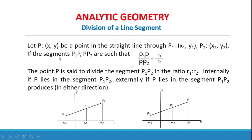Division of a Line Segment. Let P be a point in the straight line through P1(X1, Y1) and P2(X2, Y2). If the segments P1P and P2 are such that P1P over P2 is equal to R1 over R2, the point P is said to divide the segment P1P2 in the ratio R1 to R2 internally if P lies in the segment P1P2, and externally if P lies in the segment P1P2 produced in either direction.